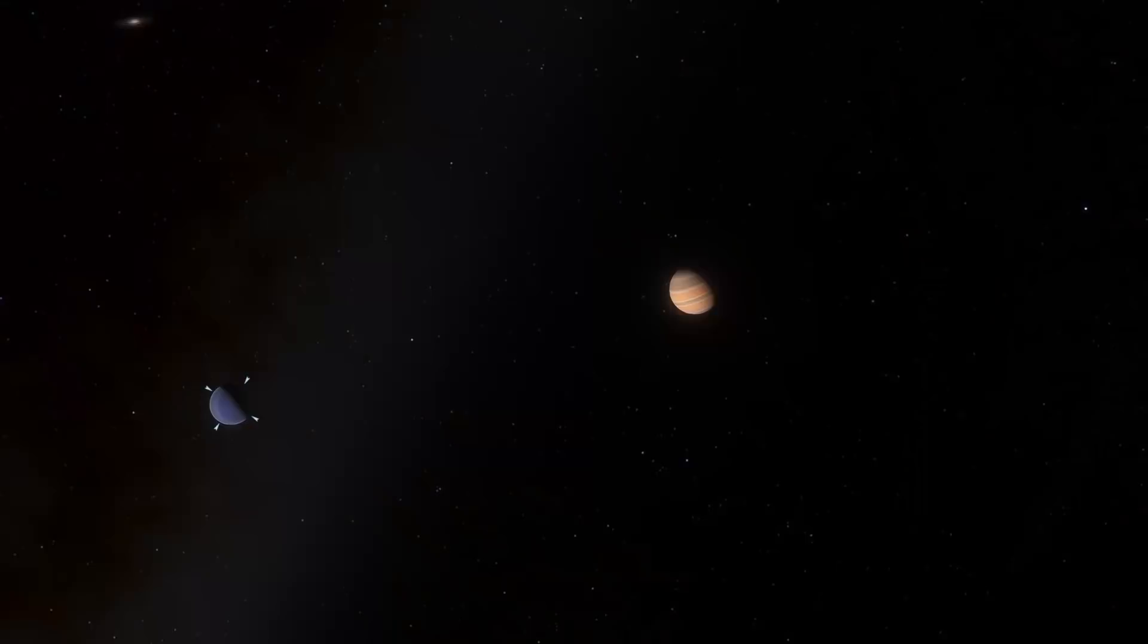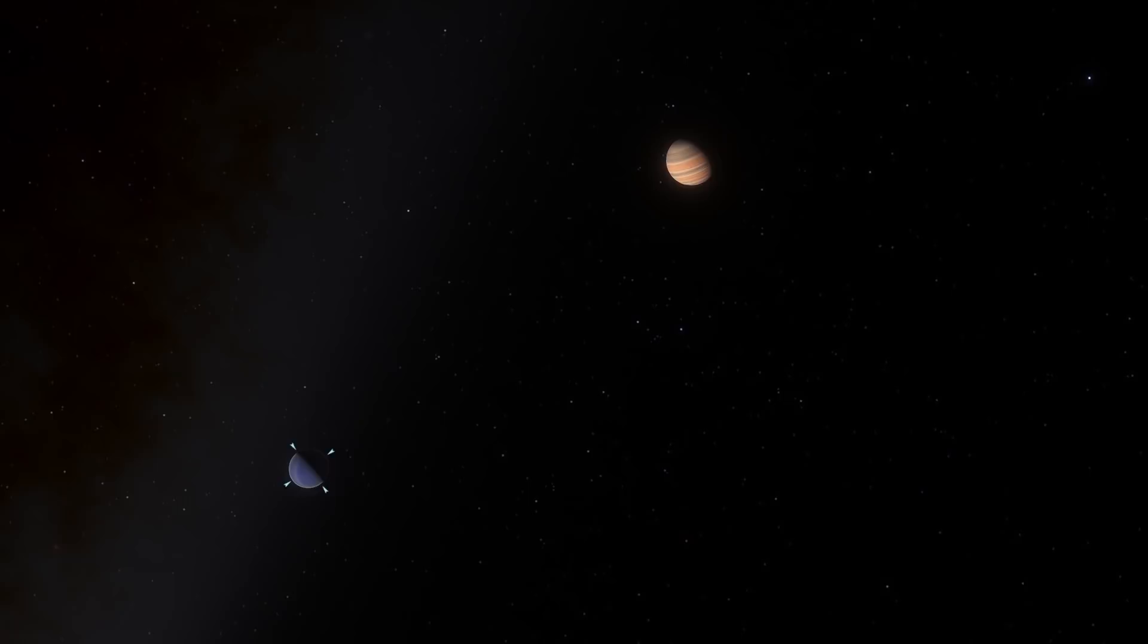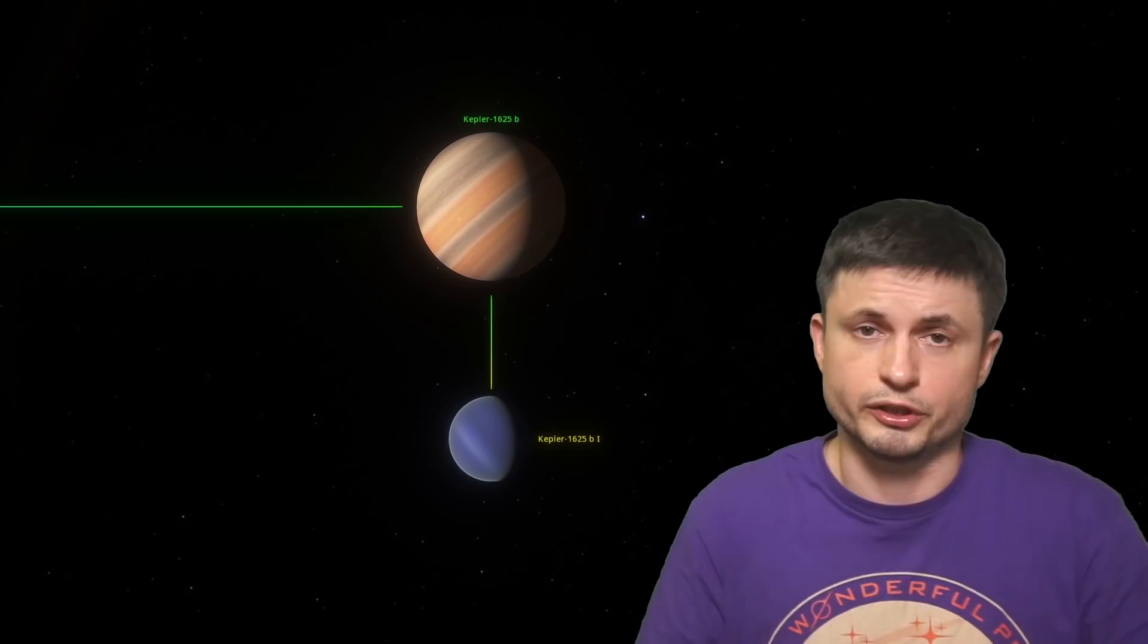if these objects are real, it sort of suggests to us that some exomoons or some satellites are practically almost the same size as the actual planet they're orbiting. Maybe not as massive, but in terms of the size, it's quite incredible.